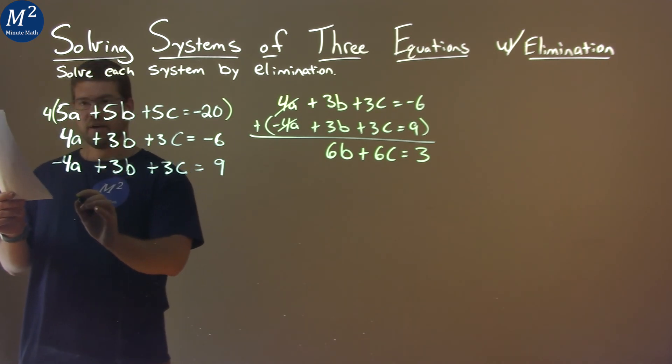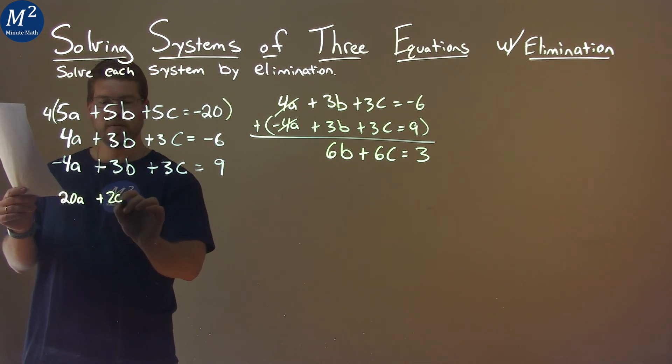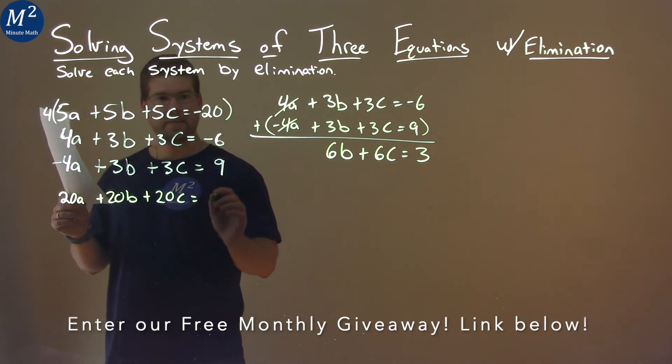4 times 5a is 20a. It's right here. 4 times 5b is 20b. We have 20c again. And then 4 times negative 20 is negative 80.